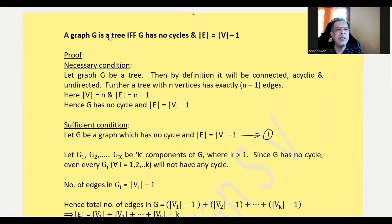Necessary condition: Let graph G be a tree. Then by definition it will be connected, acyclic, and undirected. Further, a tree with n vertices has exactly n minus 1 edges, which means |V| = n and |E| = n minus 1. Hence G has no cycle and |E| = |V| minus 1.